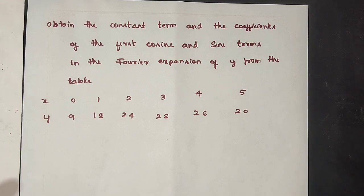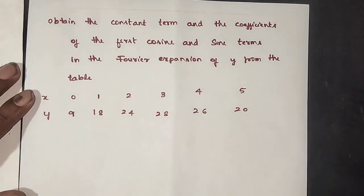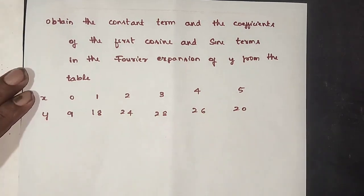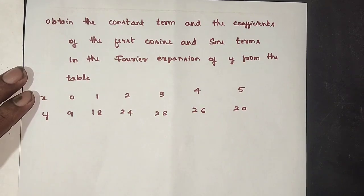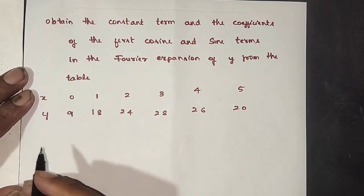Next question. Obtain the constant term and coefficient of the first cosine and sine terms in the Fourier expansion from the table.